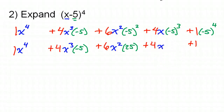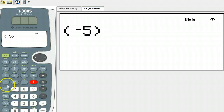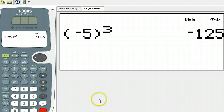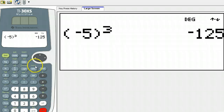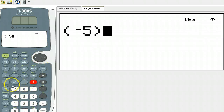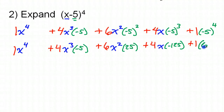Negative 5 cubed is negative 125 — odd powers leave you negative, a negative stays negative. And (-5)⁴: an even power is going to make this a positive answer, so make sure you're getting a positive result any time you do an even power. Negative 5 to the fourth power is positive 625. So when you have a negative number in your binomial, your signs are going to wind up being: positive, negative, positive, negative, positive. Just watch out for that.